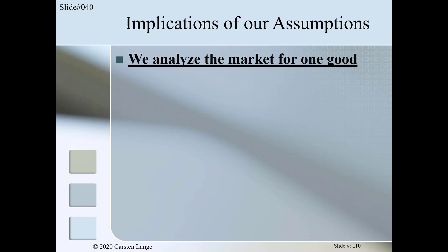How narrow or how broad we define the term 'car' depends on what we want to analyze. For general traffic research, the broad definition 'all cars' might be just fine. In contrast, if Ford wants to learn how well the F-150 pickup truck is doing in the market, they might conduct two analyses — one where they define car as a pickup truck the size of an F-150, and one where they consider only the F-150 itself — and then compare the results. For our purpose, we can ignore this problem and assume the good we analyze is clearly defined.